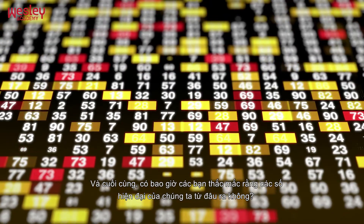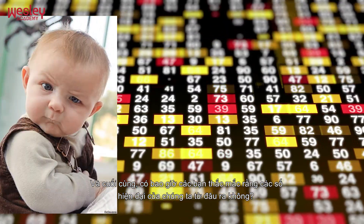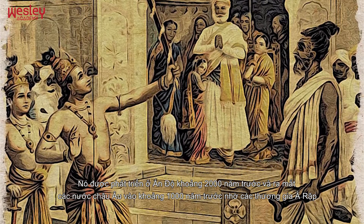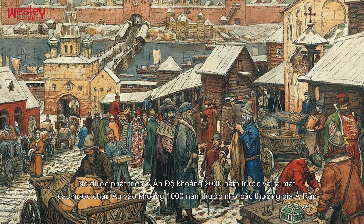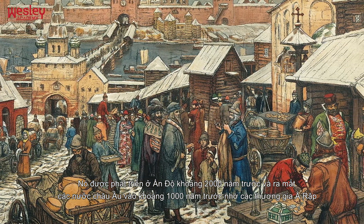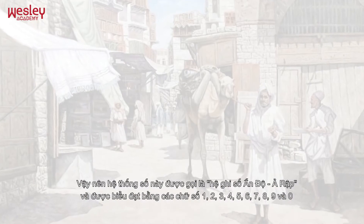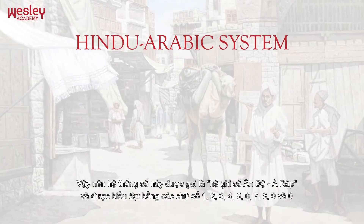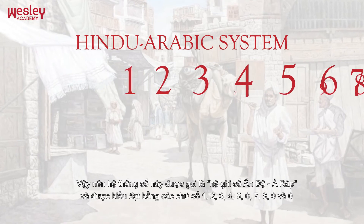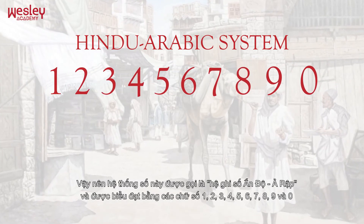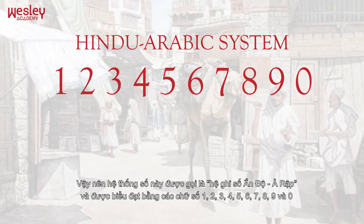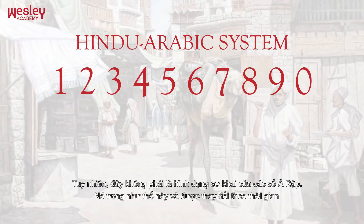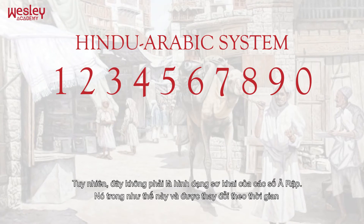Ever wondered how our modern numerals were formed? They were developed in India about two thousand years ago and introduced to European nations by Arab traders about one thousand years ago. The system was thus called the Hindu-Arabic system. It is made up of the symbols 1, 2, 3, 4, 5, 6, 7, 8, 9, and 0, which are known as digits.